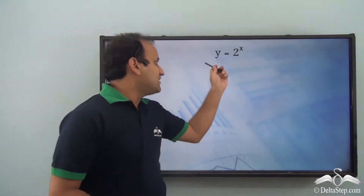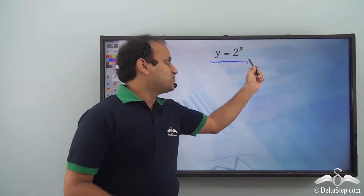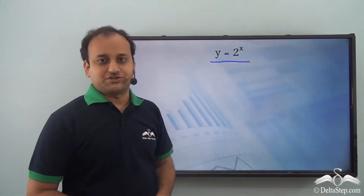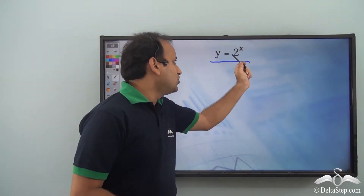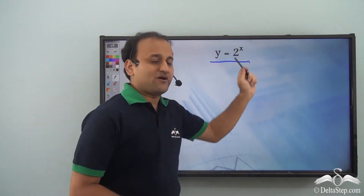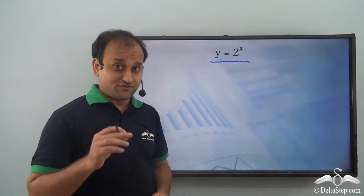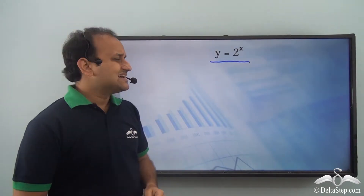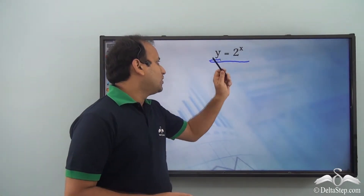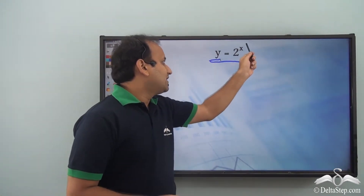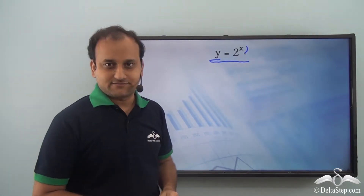So first let's consider an exponential equation. Here it is: y is equal to 2 to the power of x. What we'll do is find some values of y when we have some values of x.